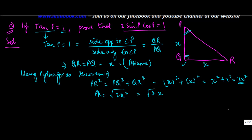Now let us put these values into the equation. We need to prove that 2 sin P cos P is equal to 1.